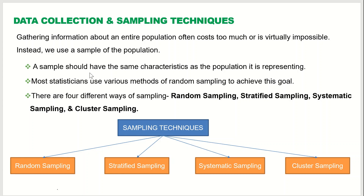The sample that we select should have the same characteristics as the population — meaning your sample should be representing the population; it should be representative of the population. Most statisticians use various methods of random sampling to achieve this goal. There are four big methods of sampling: random sampling, stratified sampling, systematic sampling, and cluster sampling.